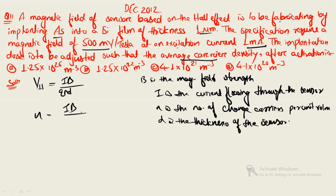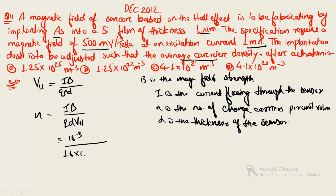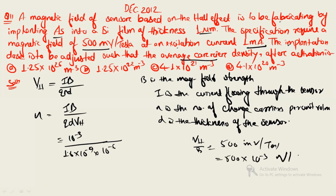Since you are asked to calculate n, rearrange to get n equals IB divided by Q times D times V_H. I is 1 milliampere, which converts to 10⁻³ amperes. The charge of an electron is 1.6 × 10⁻¹⁹. Thickness is 1 micrometer, which is 10⁻⁶ meters. V_H divided by B is 500 millivolt per Tesla, which converts to 500 × 10⁻³ volt per Tesla.